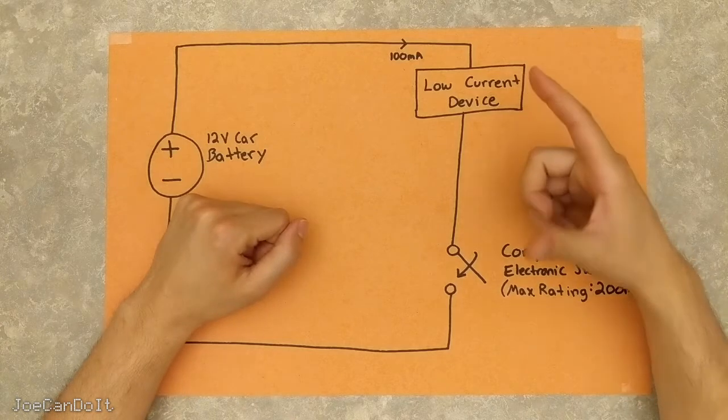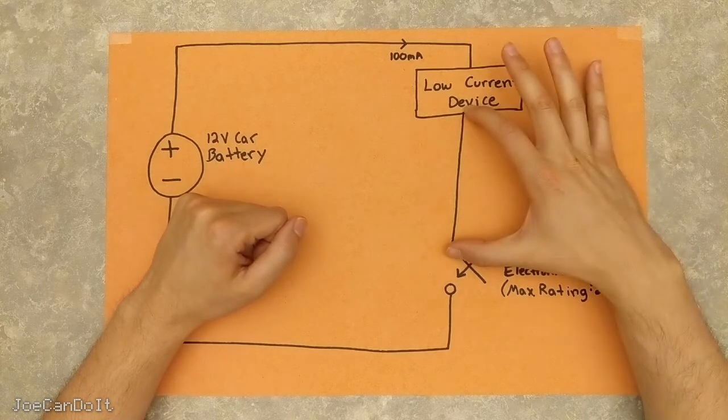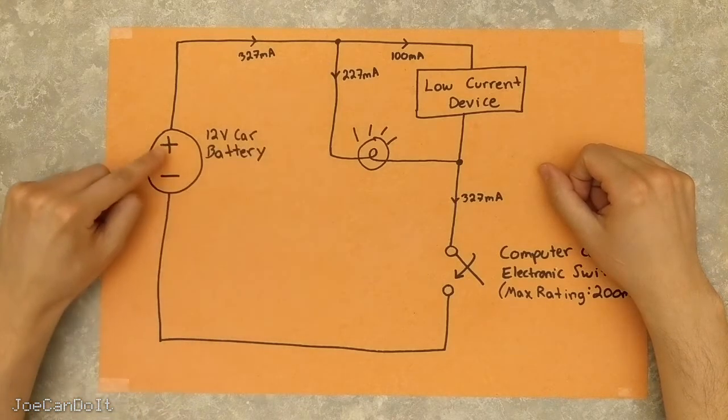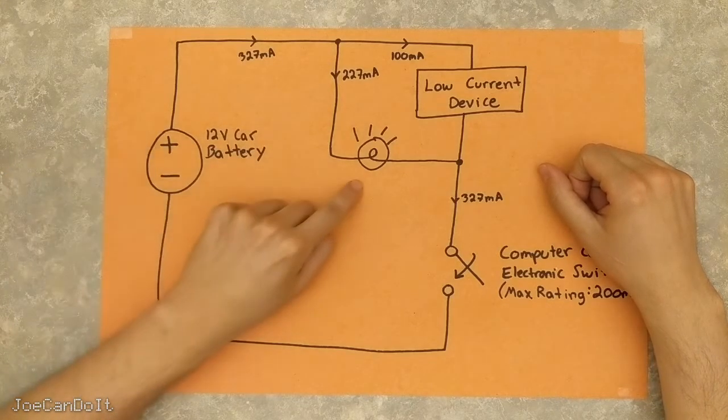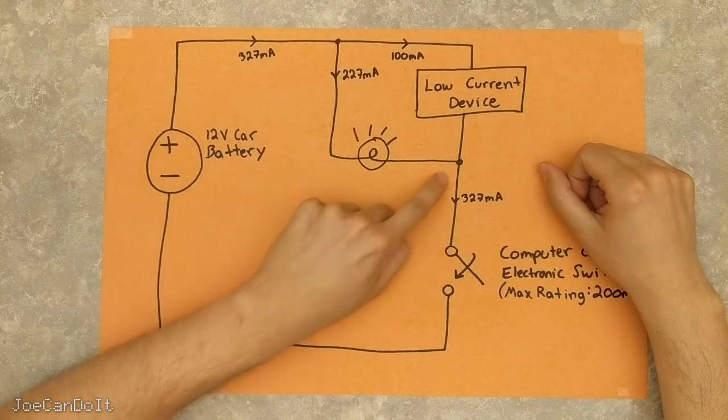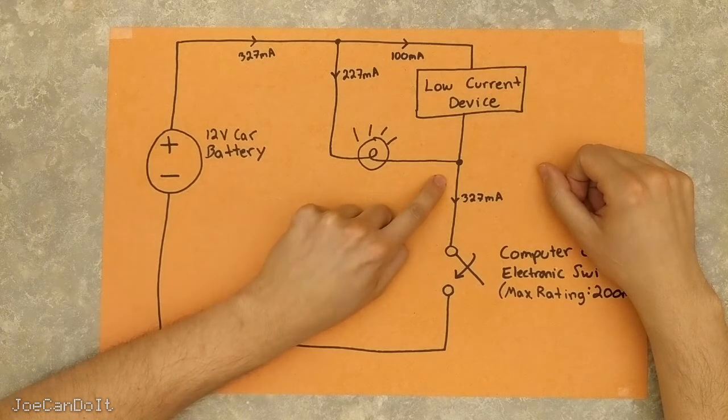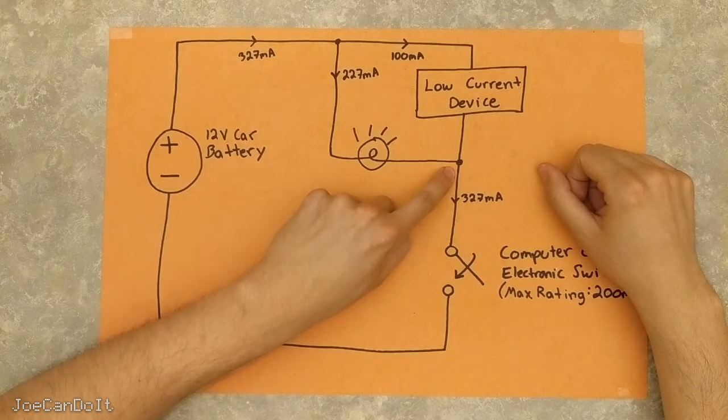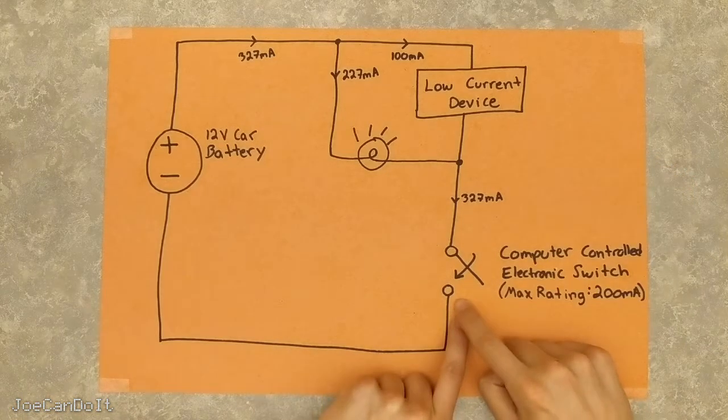And Murphy's Law says the first one that you choose is going to be the wrong one. We take our classic test light and the clip side is connected to the positive end of the battery. Because remember, we're testing for an absence or the presence of a chassis ground. So the pointy side is this side, which probes the wrong blue wire. And for this circuit, we're assuming this switch is closed.